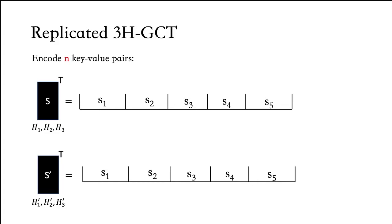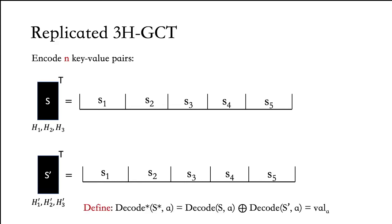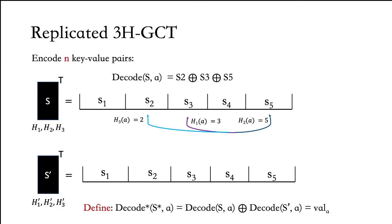I will now show our first amplification method called the replicated 3-hash-function garbled cuckoo table. To encode n keys, we start with two instances of OKVS, s and s'. Each can encode n key-value pairs; s is parameterized by three hash functions h1, h2, h3 and s' is parameterized by three different hash functions h1', h2', h3'. To decode a single key a, we compute the hash values h1(a), h2(a), h3(a), which point to positions 2, 3, and 5, giving s2 XOR s3 XOR s5 as the decode of a in the first OKVS.